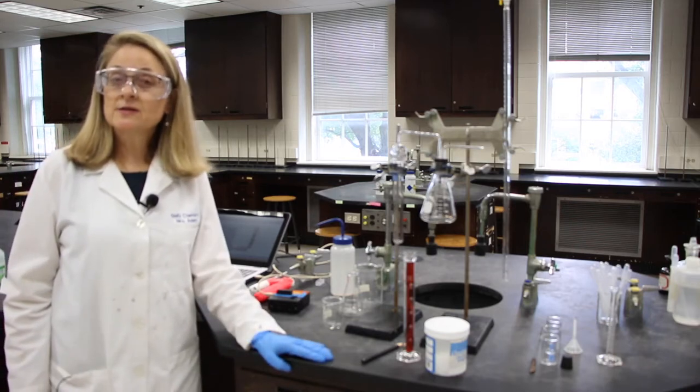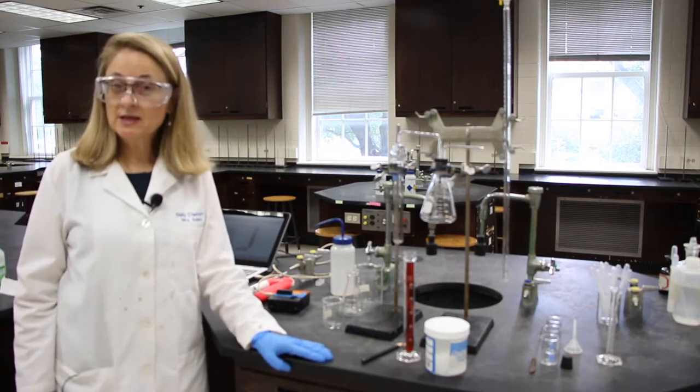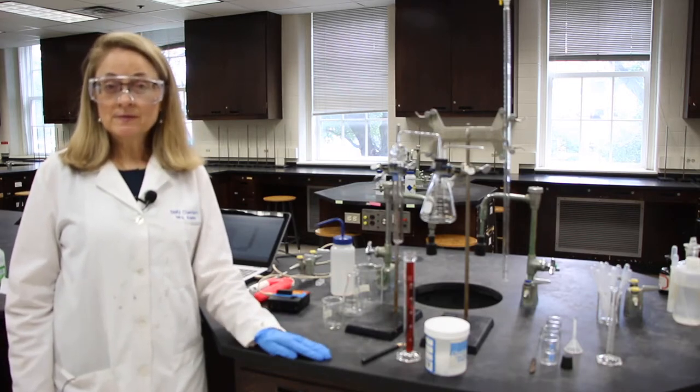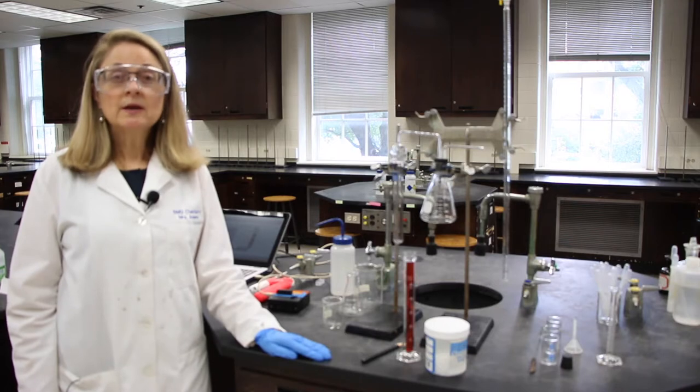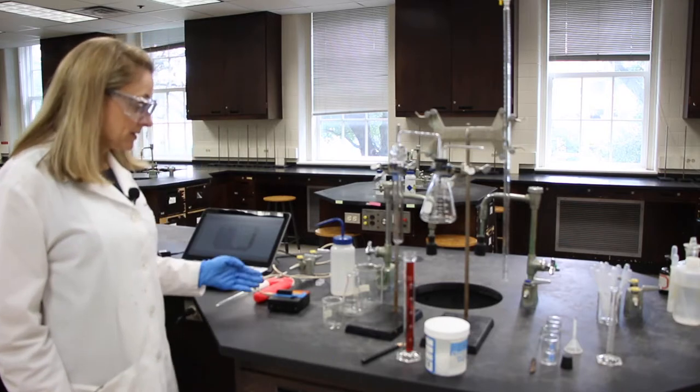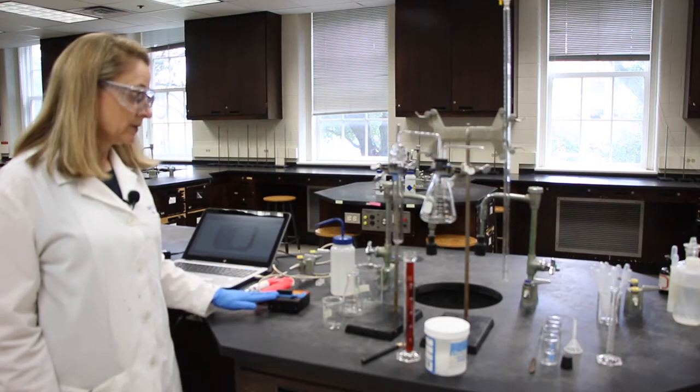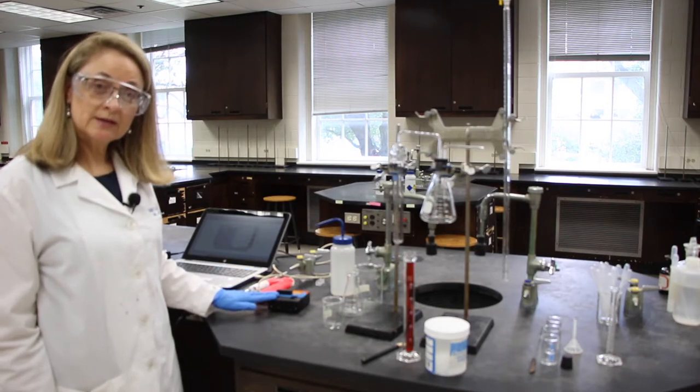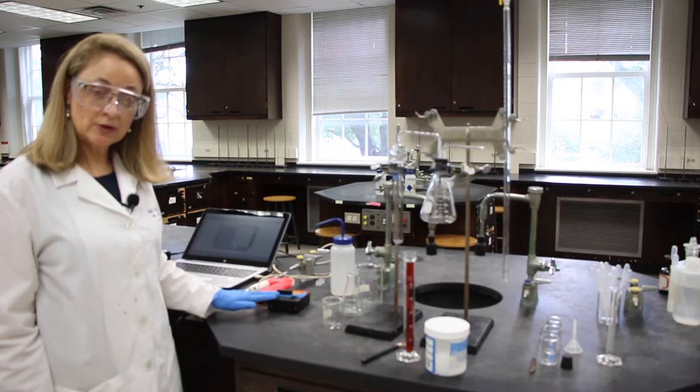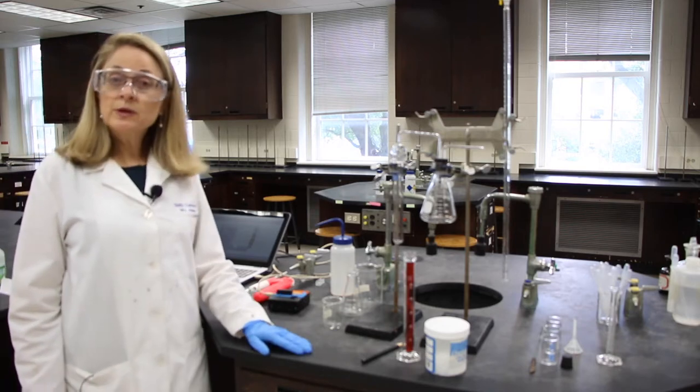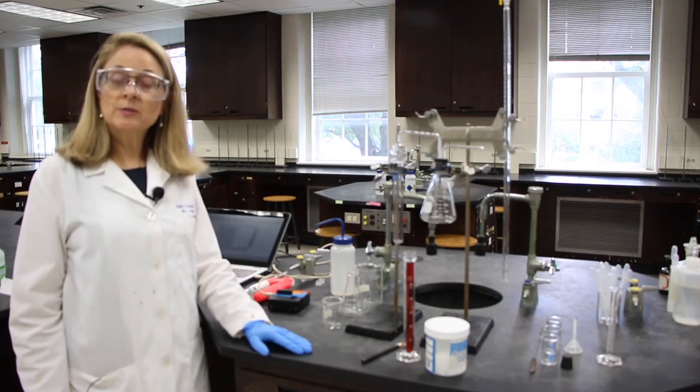This experiment has a lot of semester one techniques in it and we'll just be reviewing those. And we'll also be introducing a new piece of equipment, the spectrometer. And this will be to determine our percent copper in solution. We'll measure the absorbance. It's a highly colored solution. And we'll be using titration to determine the percent silver.